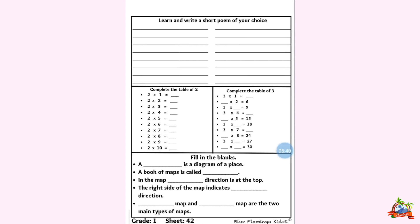Six ones are six. Six twos are twelve. Six threes are eighteen. Six fours are twenty-four. Six fives are thirty. Six sixes are thirty-six. Six sevens are forty-two. Six eights are forty-eight. Six nines are fifty-four. Six tens are sixty.